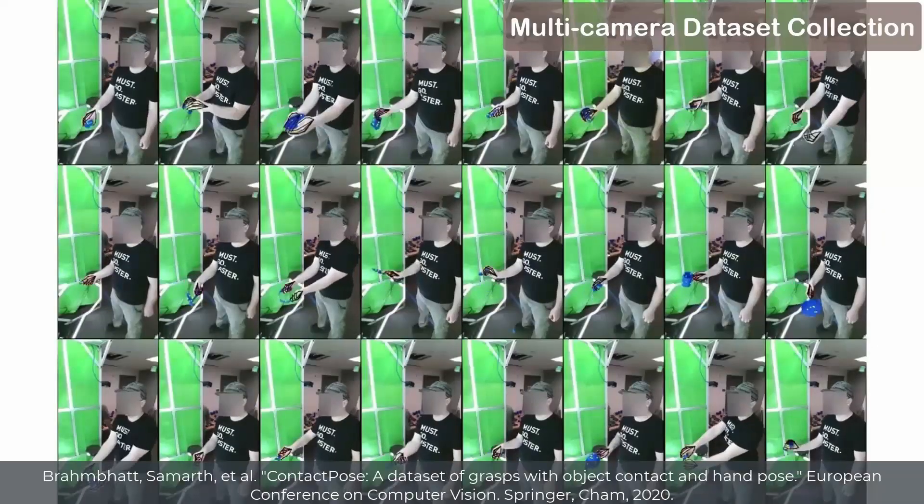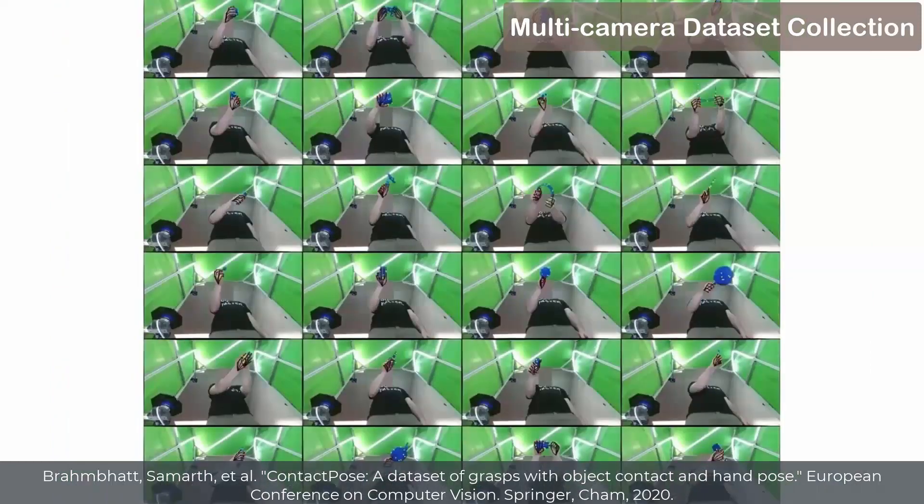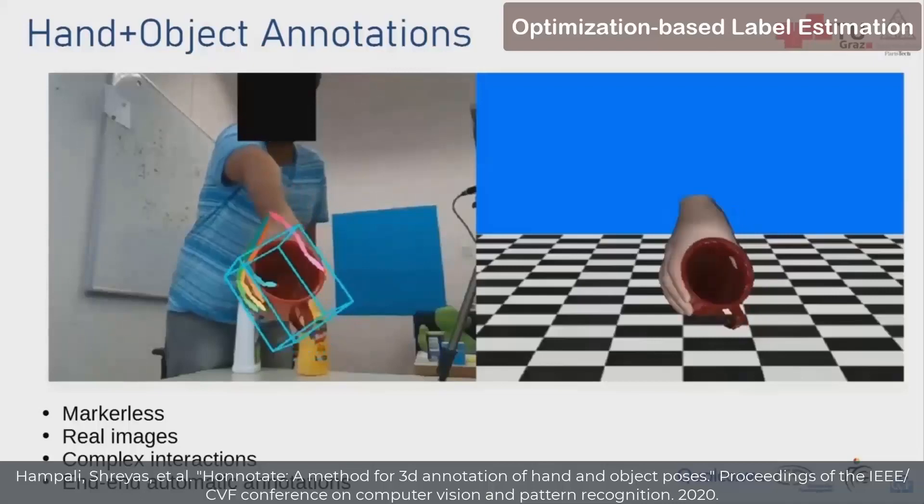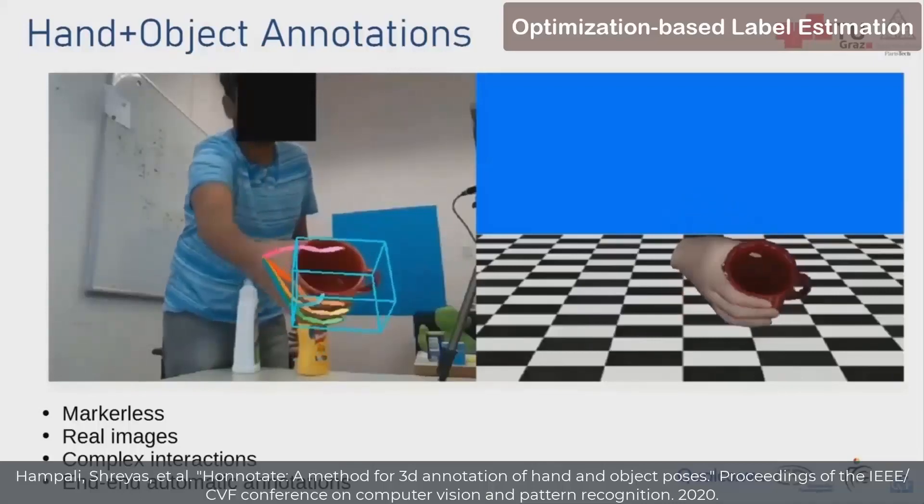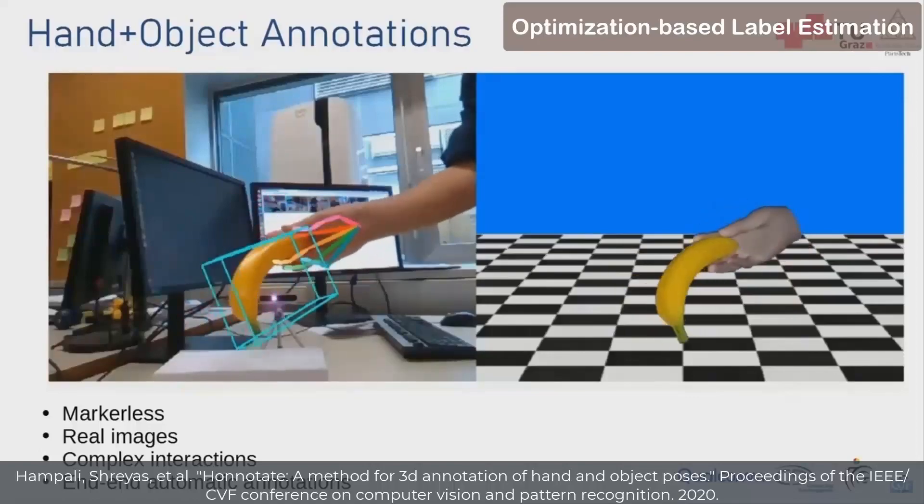Meanwhile, researchers set multiple cameras and sensors to concurrently collect data. However, these cumbersome systems are difficult to implement for any given environment and end-user. Other works use optimization algorithms to generate hand-object labels, but require the objects be included in other benchmark datasets.